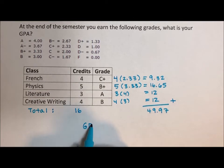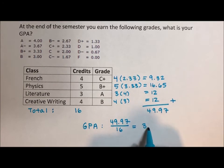So for the GPA, you've earned 49.97 points in 16 credits. If we divide this out, I'm going to round to one decimal point. You've earned a 3.1 GPA.